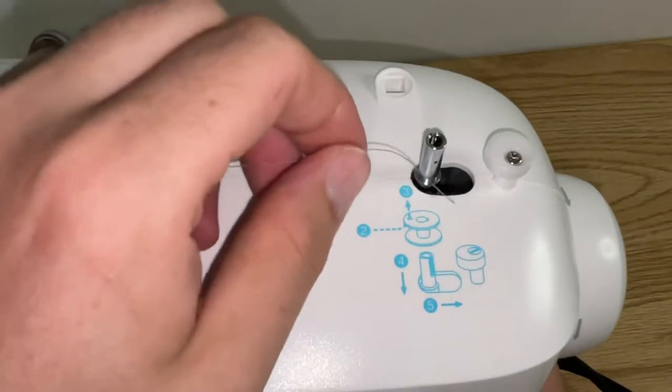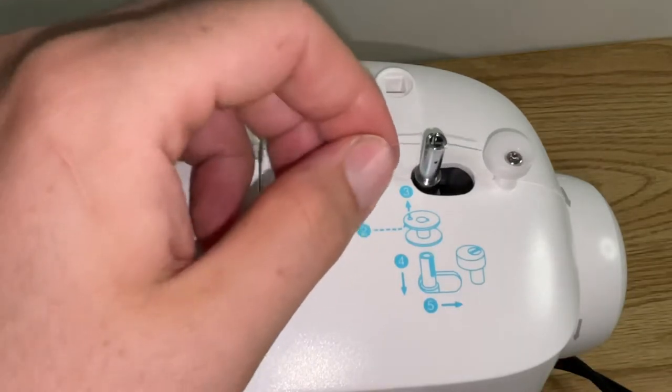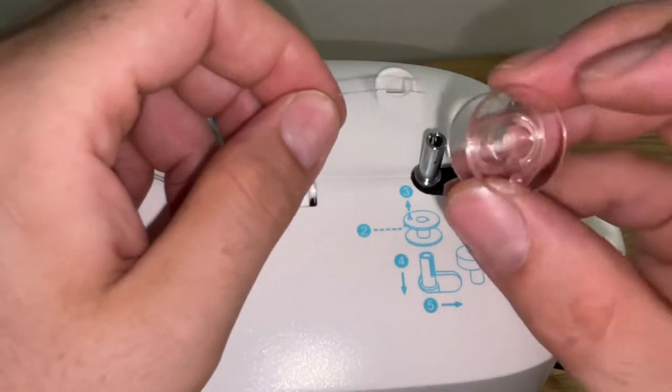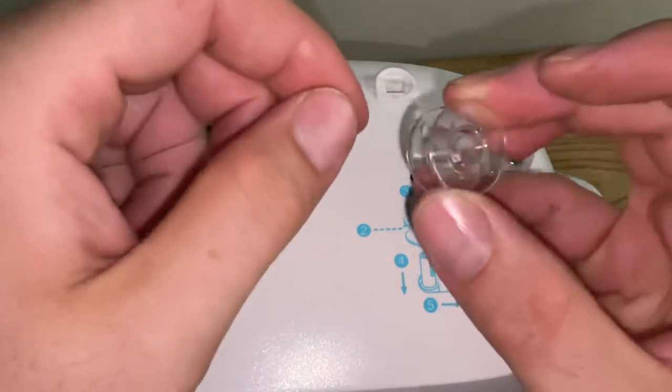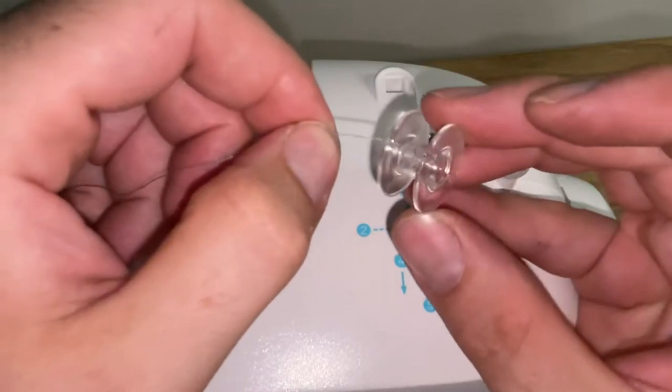Run it along, then you grab your bobbin, and if you look at the bobbin there's a small hole in the side there. We're going to put the thread through that hole.